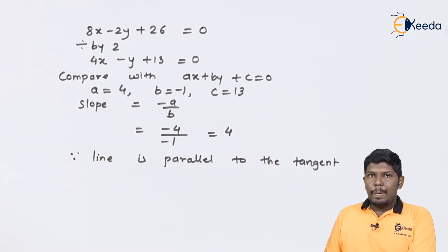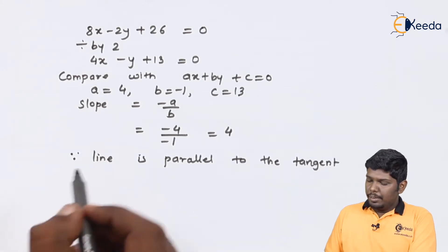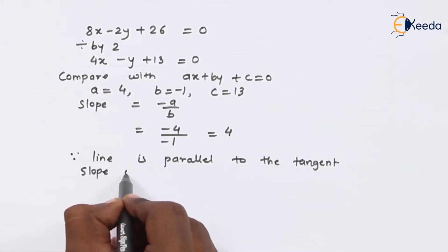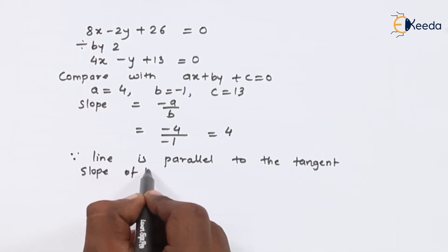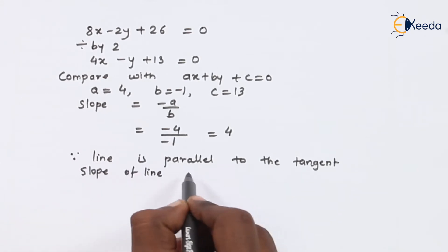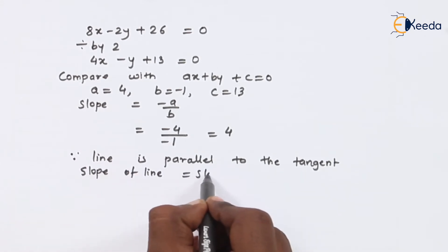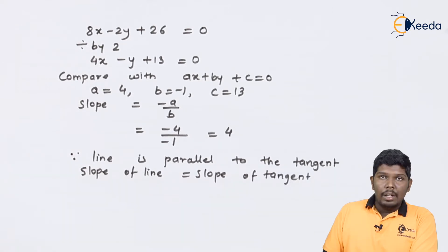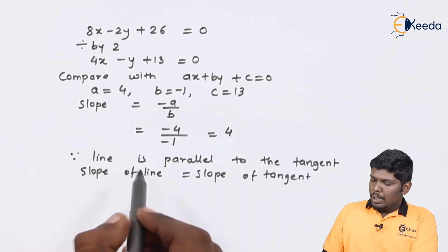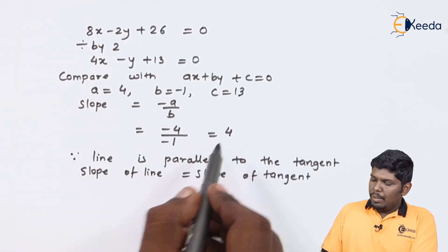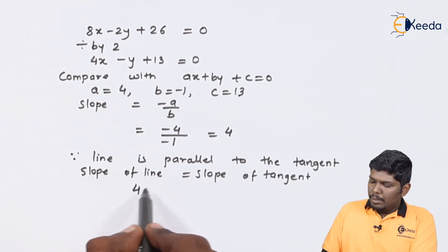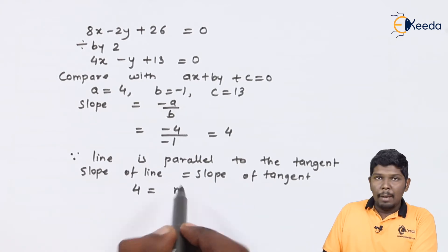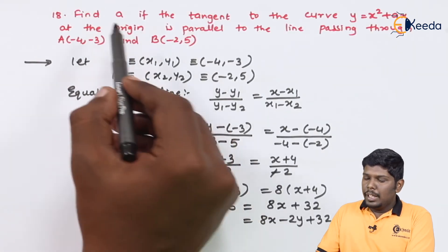Since the line is parallel to the tangent, the slope of the tangent is also equal to 4.